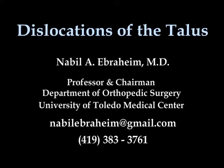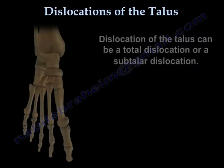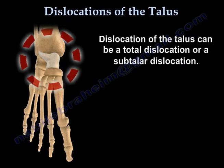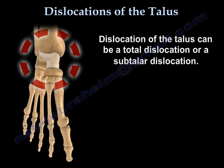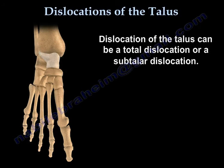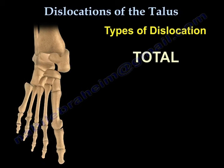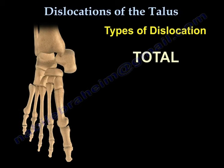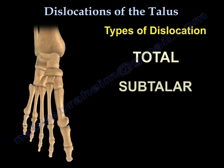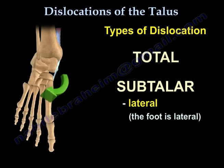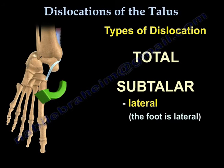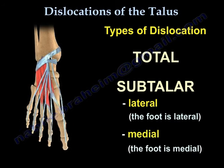Dislocations of the talus. Dislocation of the talus can be a total dislocation or a subtalar dislocation. Here is an example of the types of dislocation — total and subtalar. Subtalar dislocations can either be lateral or medial.